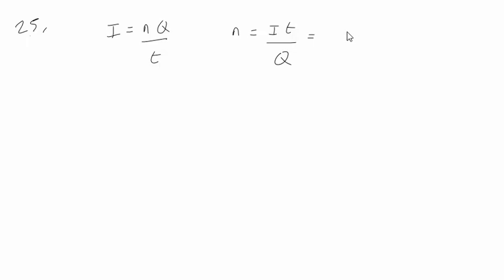The current is 0.64 amps. The time is 60 seconds, and the charge on one ion is 2 times 1.60 times 10 to the minus 19 coulombs.